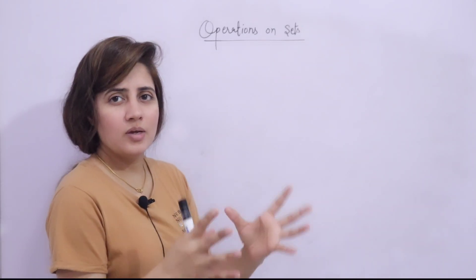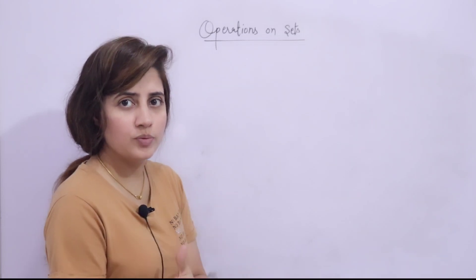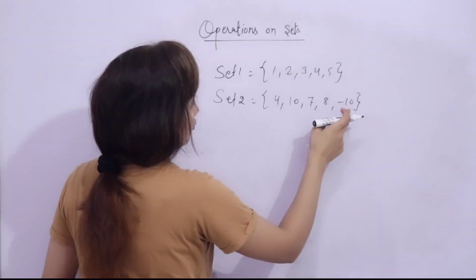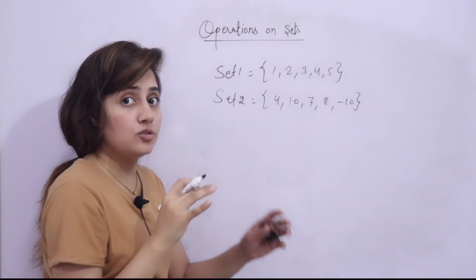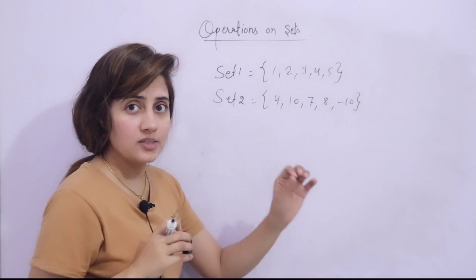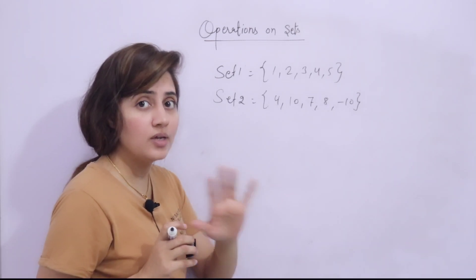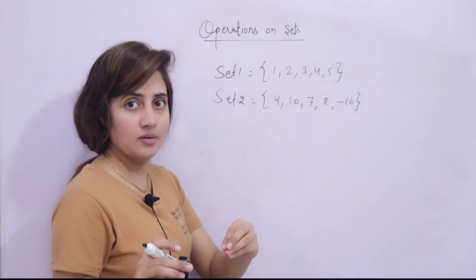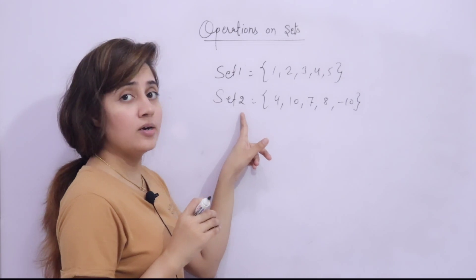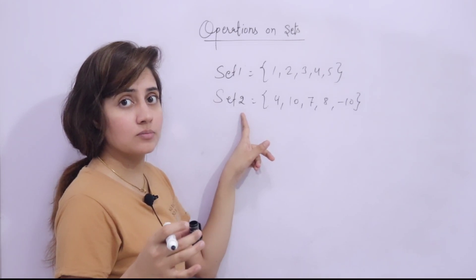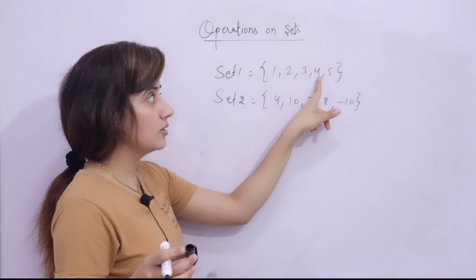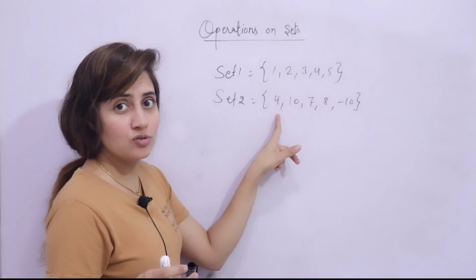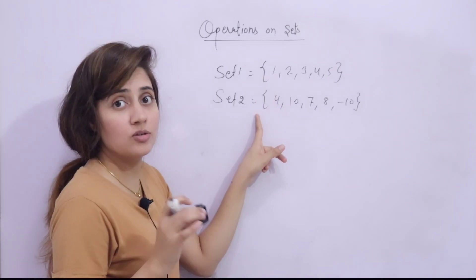Let me give you a brief about disjoint sets, subsets, and supersets. If I have two sets, disjoint sets are sets that have nothing in common — or you can say their intersection is an empty set. So if set one and set two both contain the element four, they are not disjoint because their intersection is four, which is not an empty set.